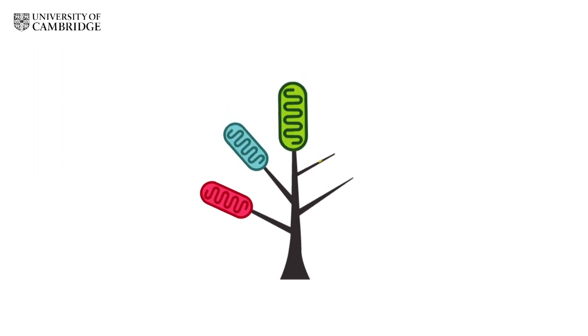If we think about all the tumours being related on a family tree, there are five main branches, each with its own mitochondrial DNA, which we call clades.